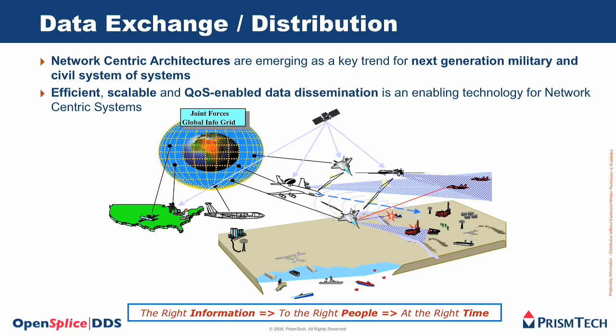Even further, if we consider the trend toward network-centric systems, this creates a major hurdle with respect to interoperability. If each system uses a slightly different technology for addressing the same problem, then implementing the so-called global information grid will be a major headache. All systems will be distributing data with different technologies that won't be interoperable, and achieving interoperability will require solving an n-squared problem — very expensive as well as very tedious.